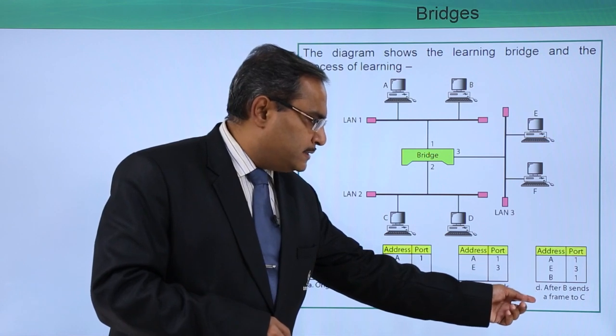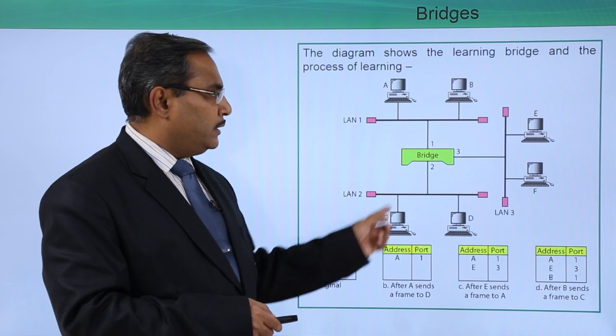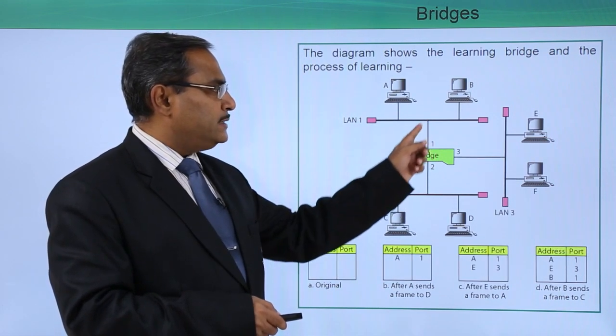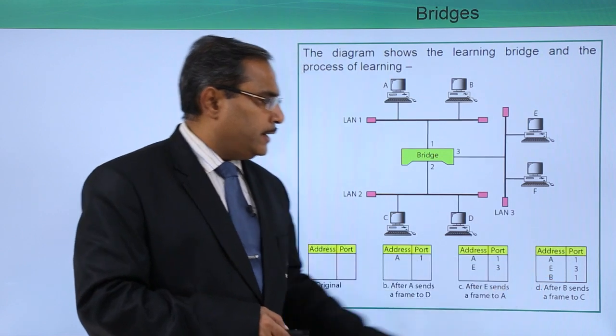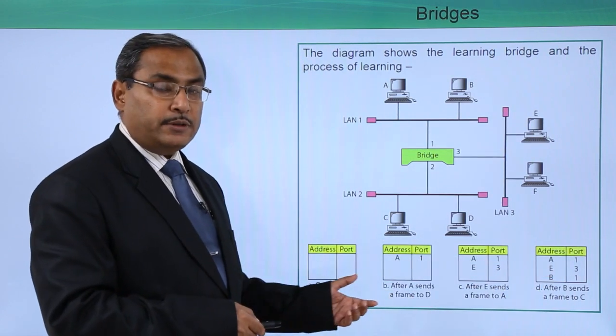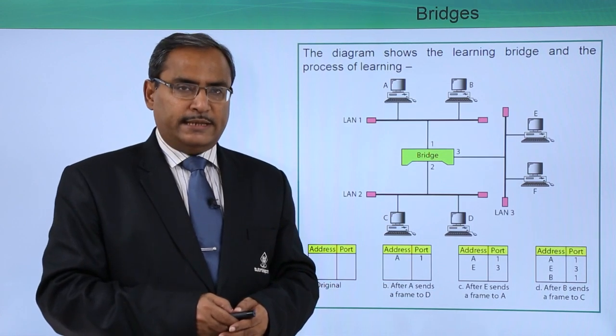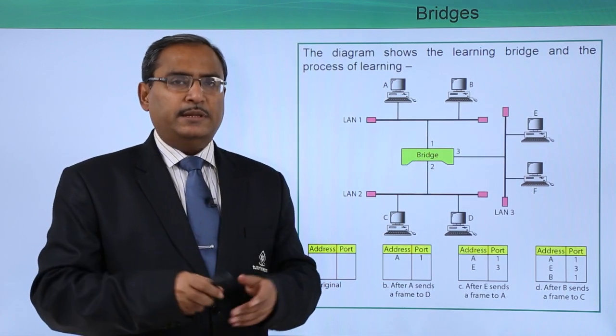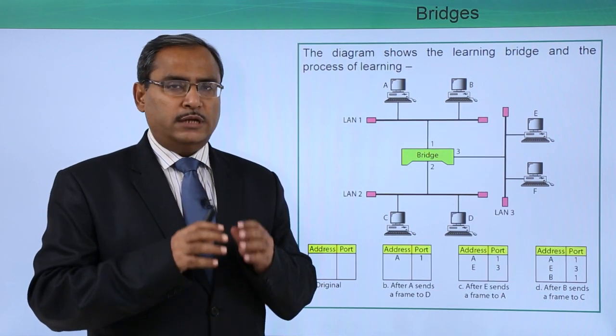Now after B sends a frame to C, this particular C is this one, then it indicates that B is connected at port 1 of this bridge, so B1 will be written in the respective bridge table. Here we are finding how the bridge table is learning and the bridge table is getting constructed. I think you are getting this idea, how does bridge work.